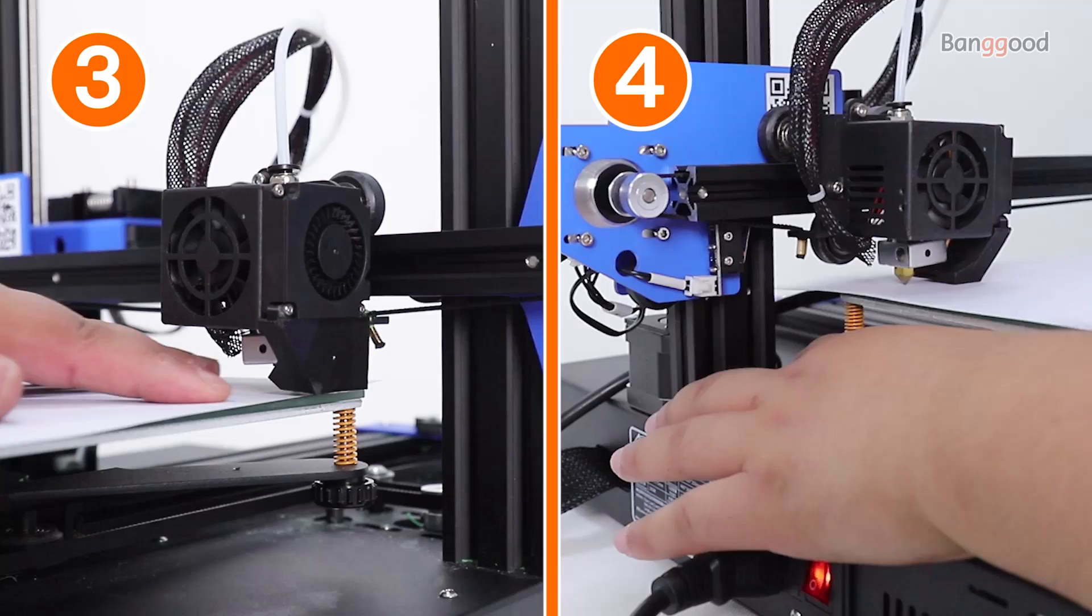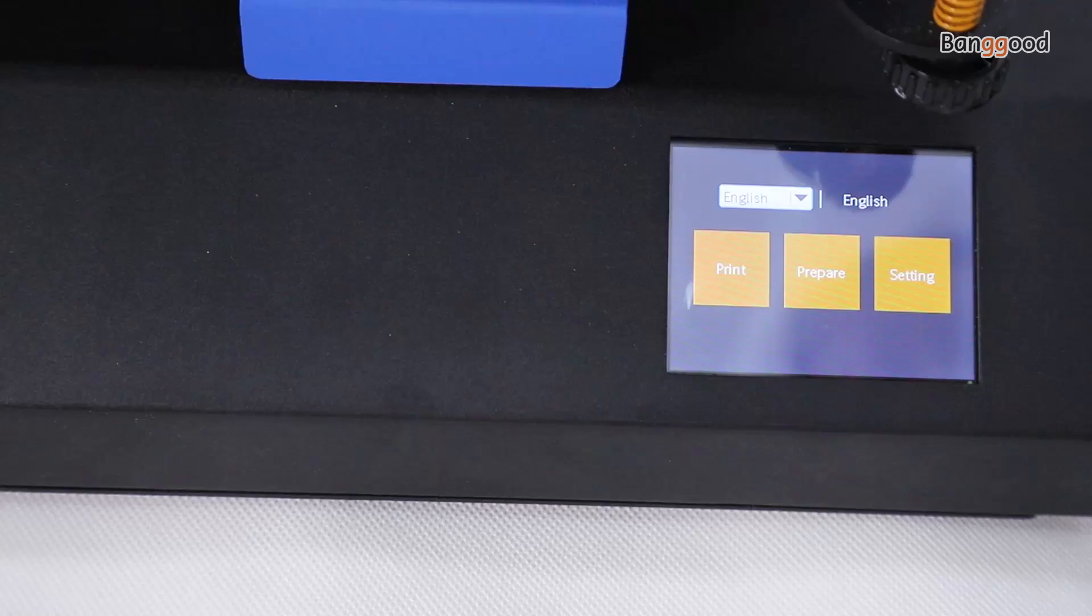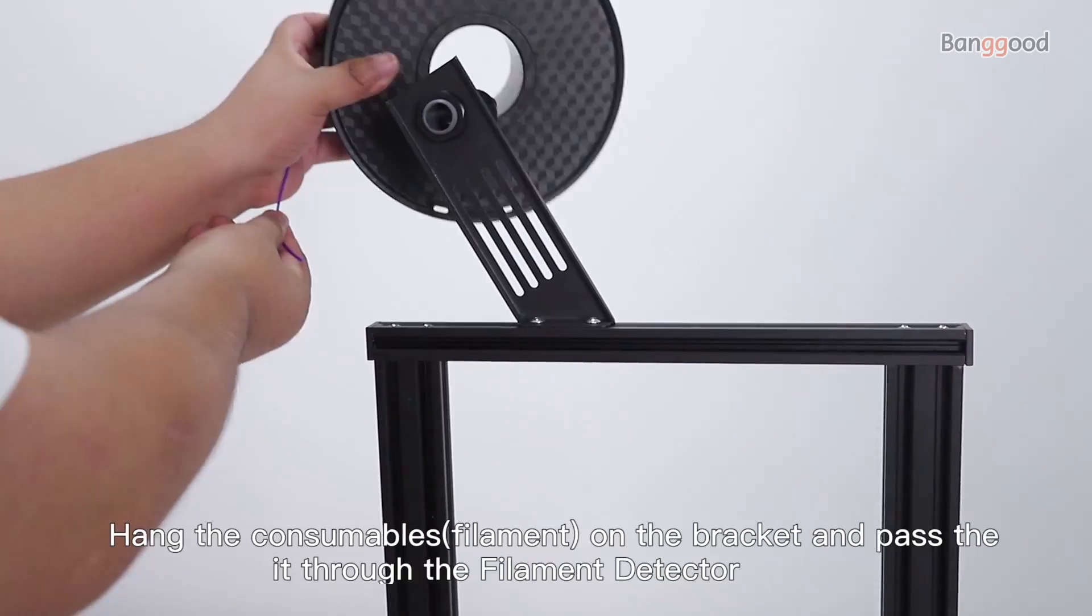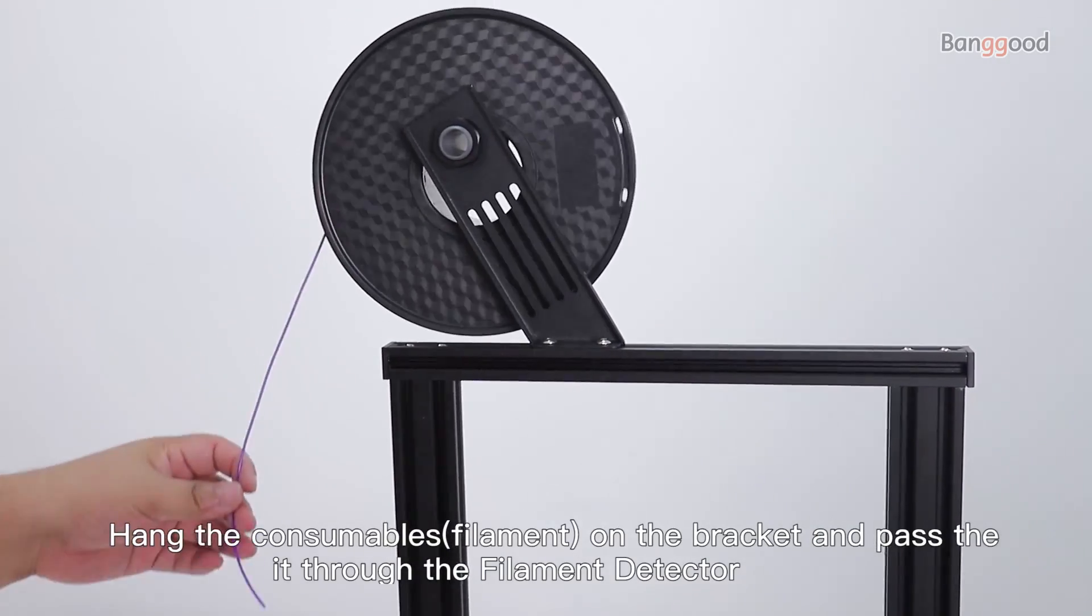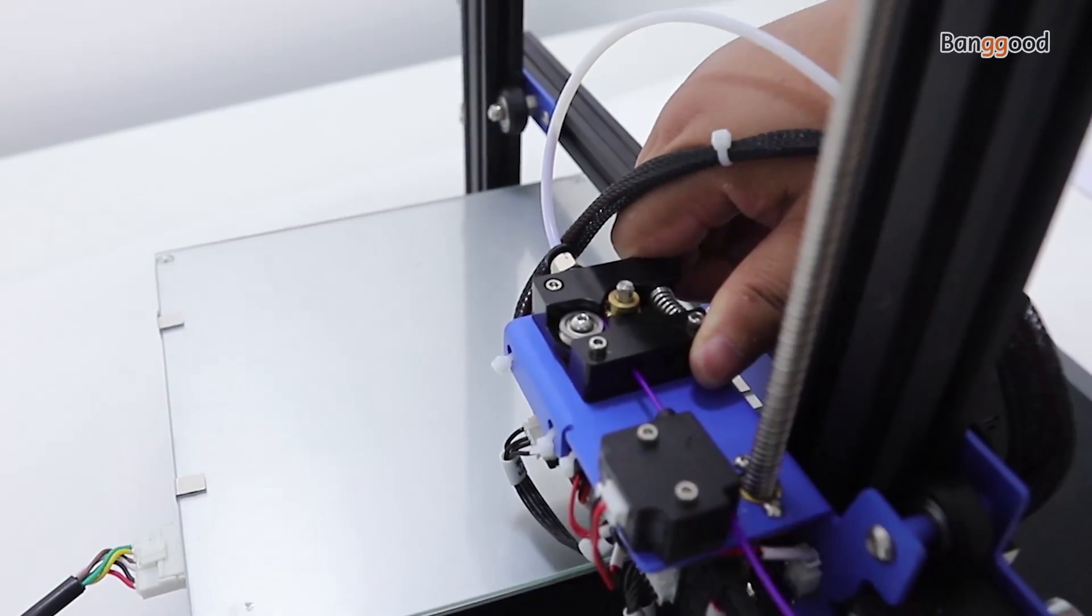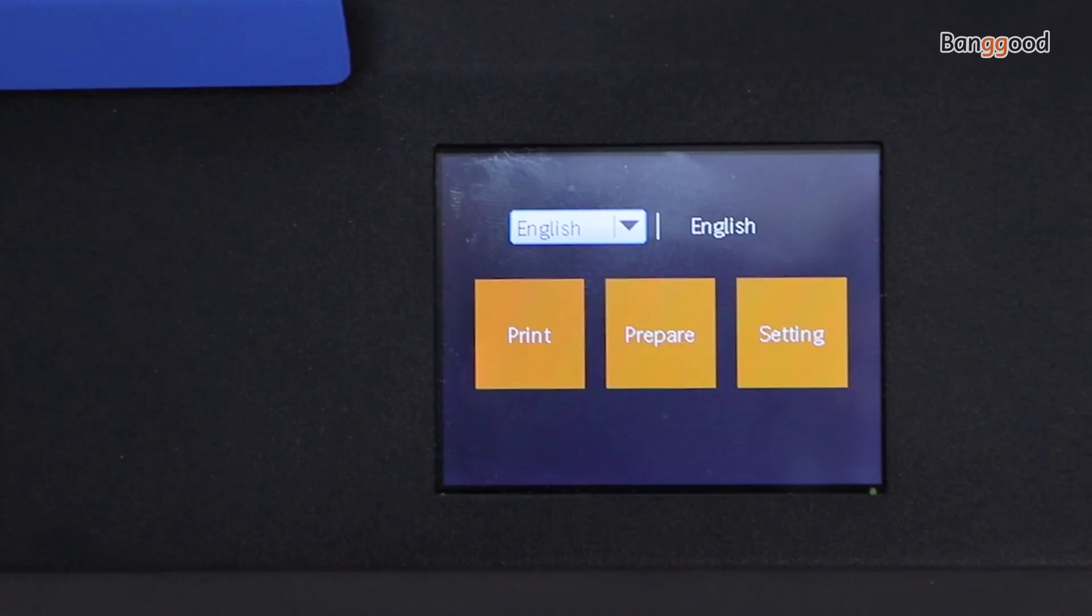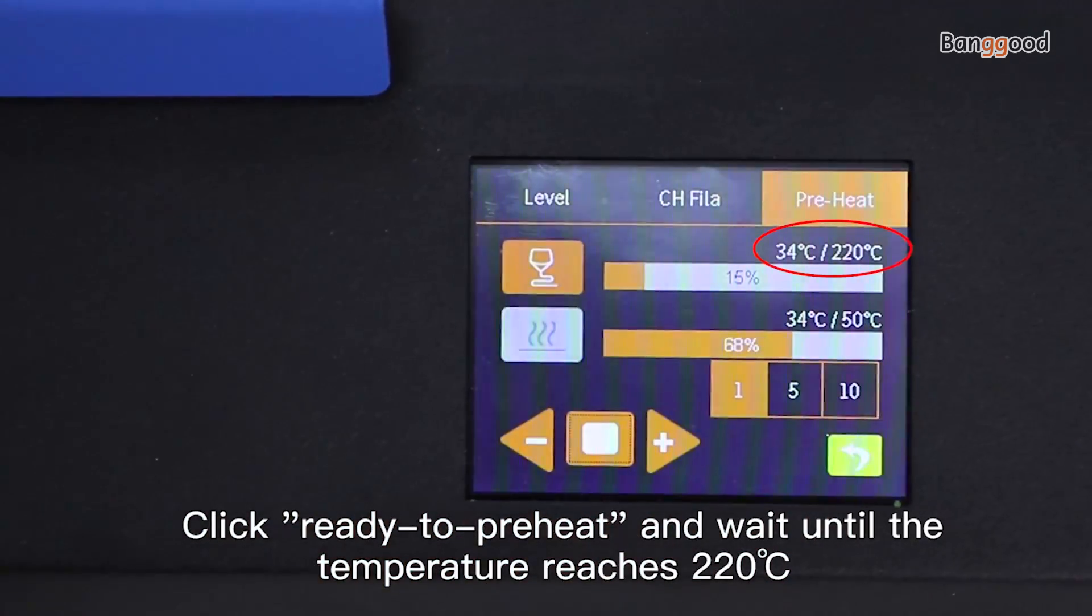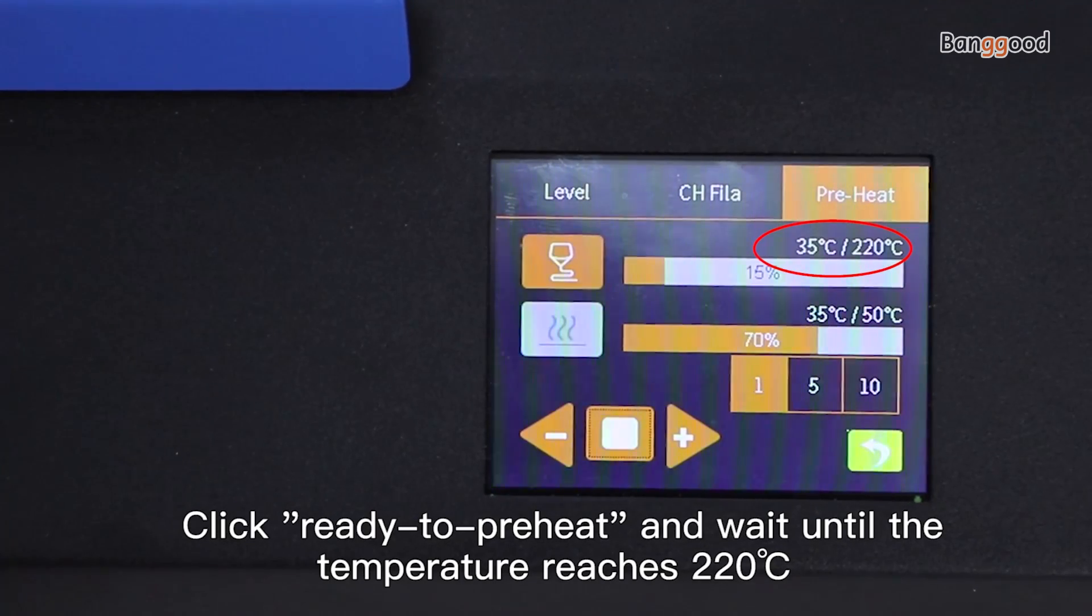Turn on and return to the home page. Hang the filament on the bracket and pass it through the filament detector. Then click ready to preheat and wait until the temperature reaches 210 degrees.